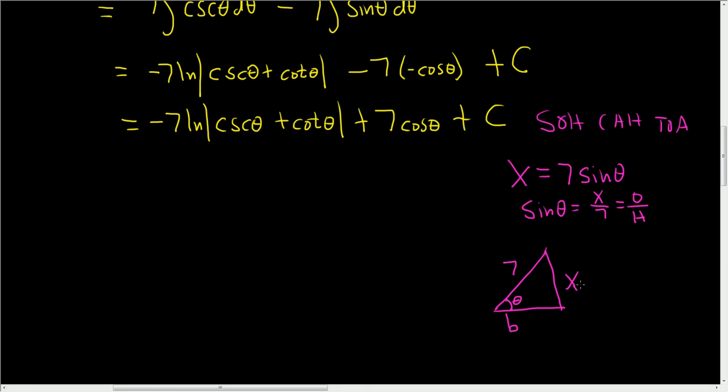And if we call this b, we can use the theorem of Pythagoras to solve for b. So 7 squared is equal to x squared plus b squared. That means that 49 minus x squared is equal to b squared. And so b is equal to the square root of 49 minus x squared. And the reason it's not plus or minus, it's just plus, is because it's the length of the side of a triangle.